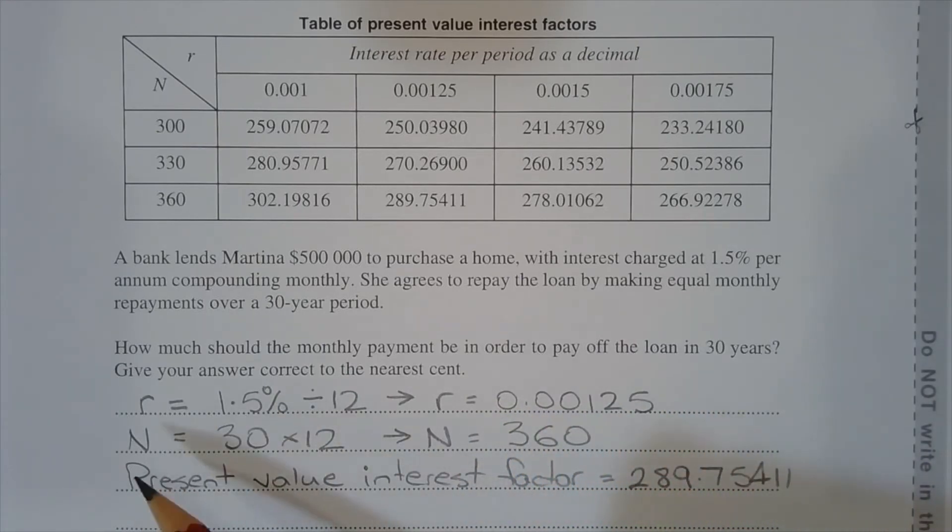The number of compounding periods n is equal to 30 years multiplied by 12 compounding periods per year. n is equal to 360.